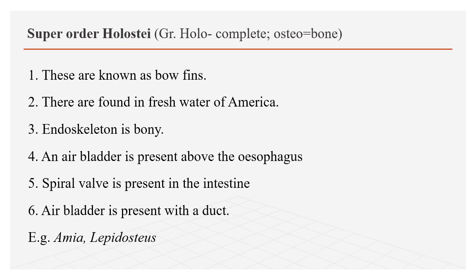The next super order is Holostei — meaning complete bone, where fin rays are fully bony. These are freshwater fishes of America. Endoskeleton is bony. Air bladder is present above the esophagus. Spiral valve is present in the intestine. Example: Amia, commonly called bowfin, and Lepidosteus (gar).